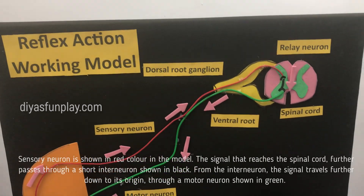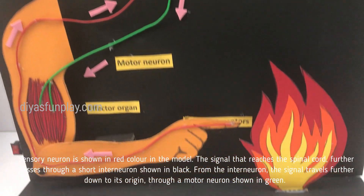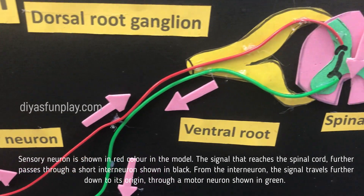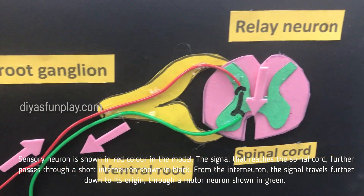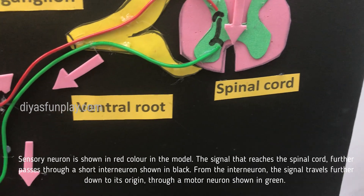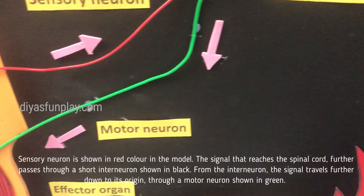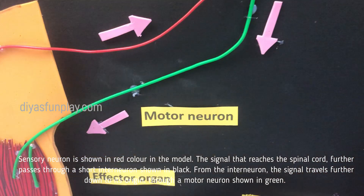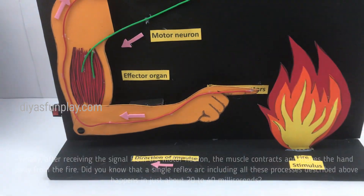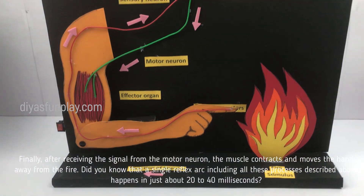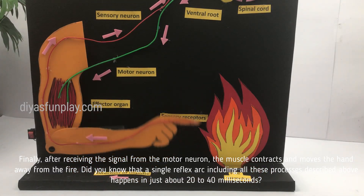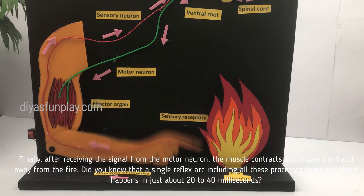The sensory neuron is shown in red color in this model. The signal that reaches the spinal cord further passes through a short interneuron shown in black. From the interneuron, the signal travels further down towards the origin through a motor neuron shown in green. Finally, after receiving the signal from the motor neuron, the muscle contracts and moves the hand away from the fire.